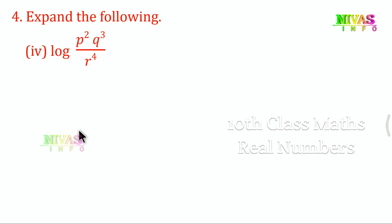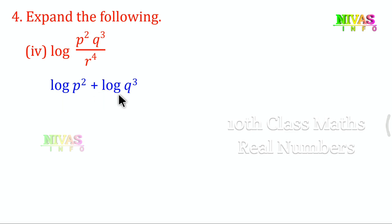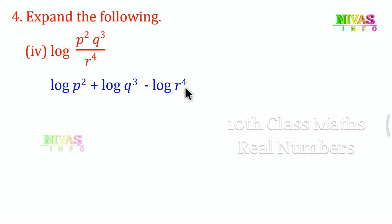Expanding: log p squared plus log q cubed minus log r to the power 4. The multiplication parts give addition and the division part gives subtraction.